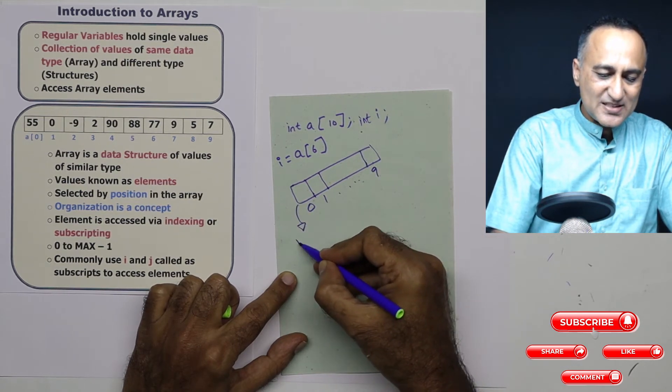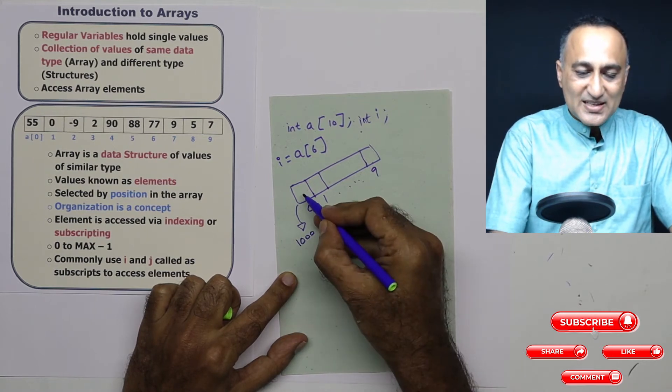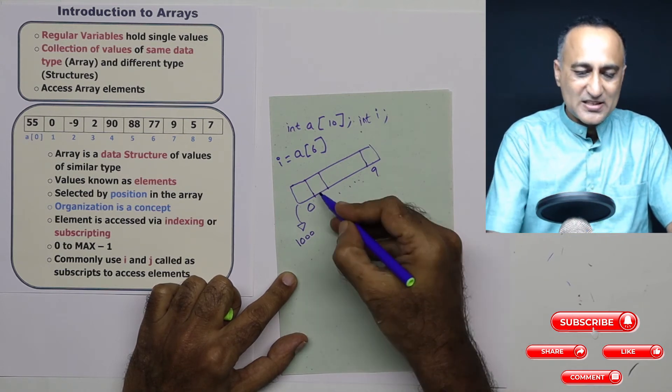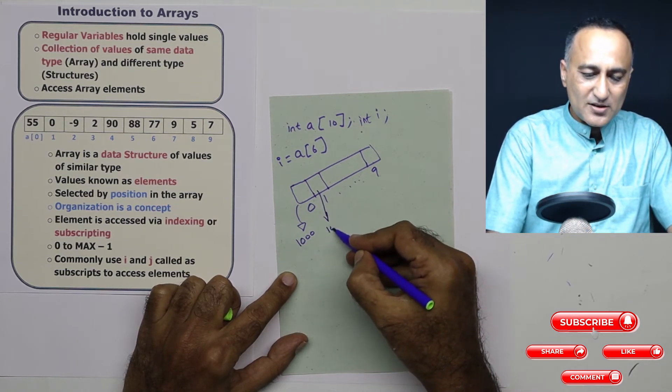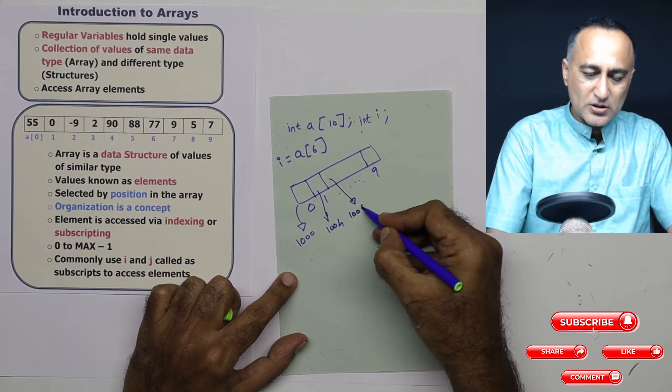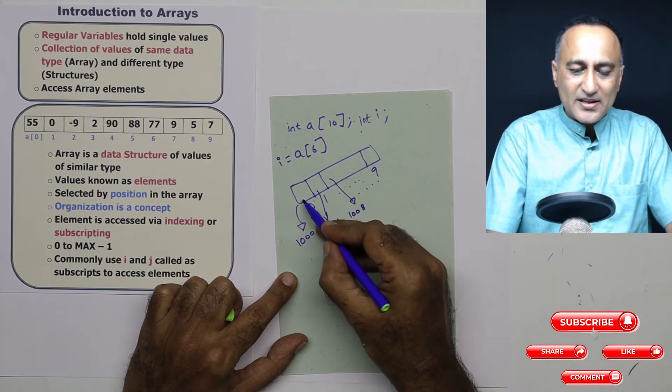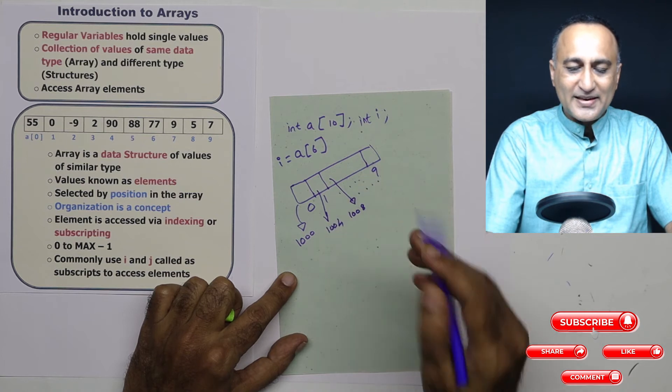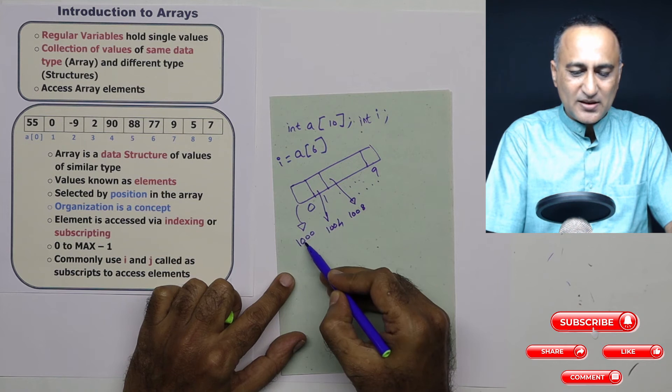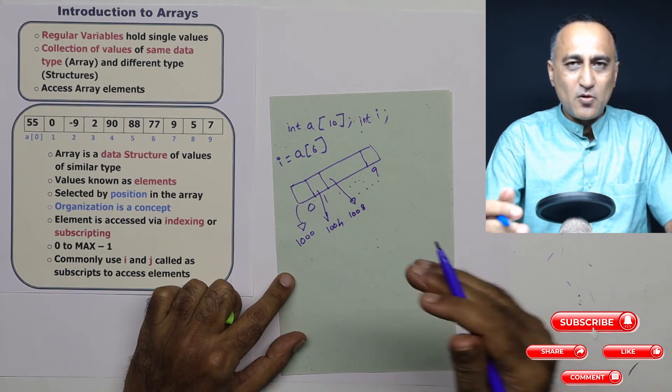Let us say the address of this is 1000. The 0th location is 1000. Since these are all integers, assuming the size of integers to be 4 bytes, then the first location is going to be stored at 1004. Then this location is going to be stored at 1008. This particular process will continue till the space is allocated for all the 10 elements. So starting from the 0th location starting at 1000, the last location is going to be stored at 1000 some odd number.